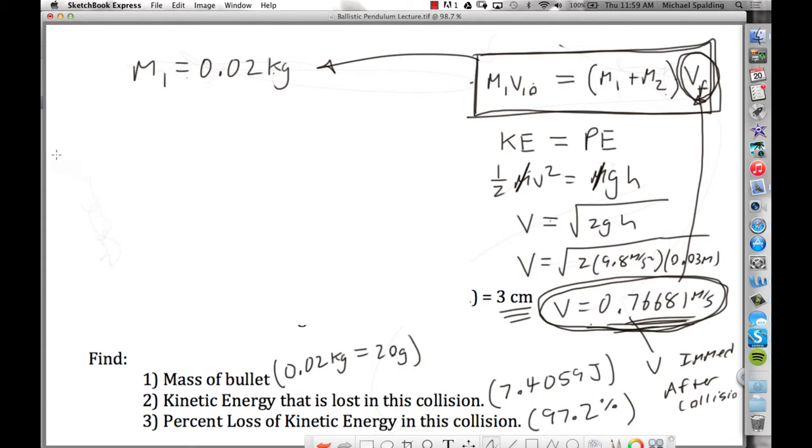before the collision, before the collision, what was the only thing with kinetic energy? The bullet. The bullet. So this would be kinetic one initial. Okay. You do one-half mv squared for the bullet.